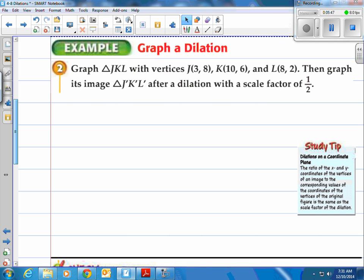So here's two. Graph triangle J, K, L with vertices 3, 8, 10, 6, and 8, 2 for J, K, and L, respectively. Then graph its image, which would be J prime, K prime, L prime, after a dilation with a scale factor of 1 half. So all we're going to do is take this 1 half, this number here, 0.5, 1 half, whatever you want to call it, and literally multiply it by each one of these here.